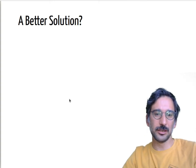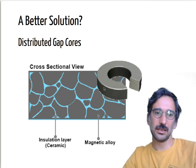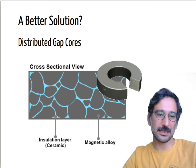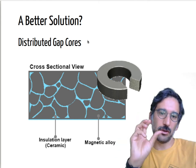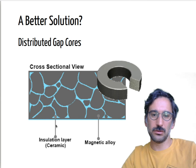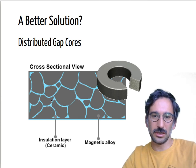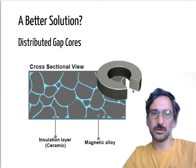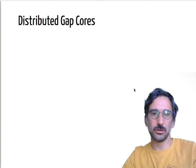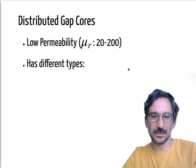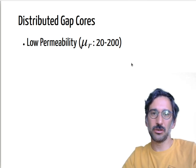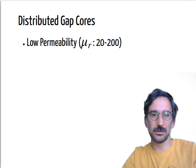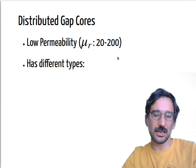There are also gapped toroids. An even better solution is distributed gap cores: instead of having iron powder particles closely touching each other, insulation layers are inserted between them, creating many tiny air gaps distributed throughout the core. This makes the core mechanically more robust and also provides advantages in terms of eddy currents. Because of those distributed air gaps, the equivalent permeability is quite low — sometimes even lower than 20.